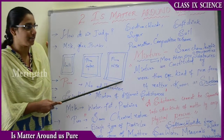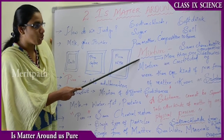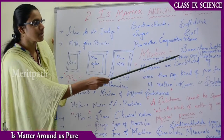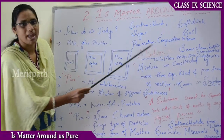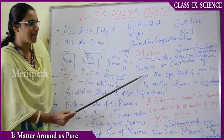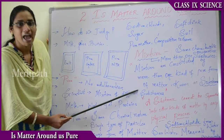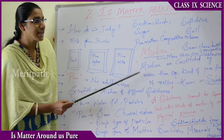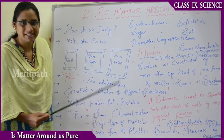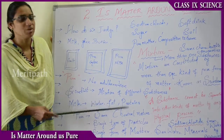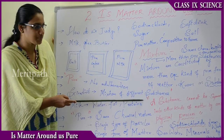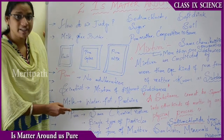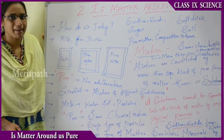A mixture is defined as a composition of more than one substance. A substance, on the other hand, cannot be separated into other kinds of matter by any physical process — it is a basic form of matter that cannot be divided further.